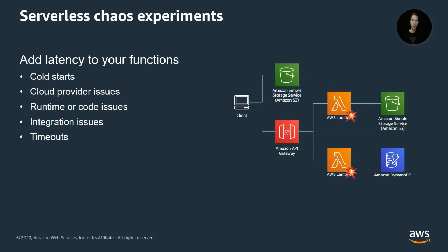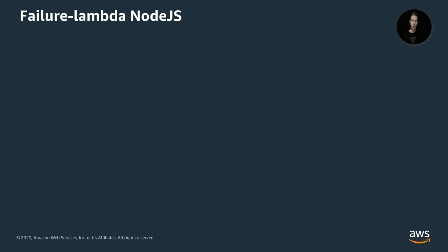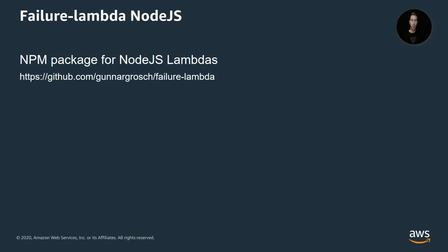Since we don't have access to the underlying infrastructure like we would with EC2 instances or containers, we use libraries to do these experiments. One library we're going to use is called Failure Lambda — it's for Node.js, it's a library I've created, and it's open source, available as an NPM package. If you're using Python, there's another package called Chaos Lambda by Adrian Hornsby, which has more or less the same functionality for Python functions.